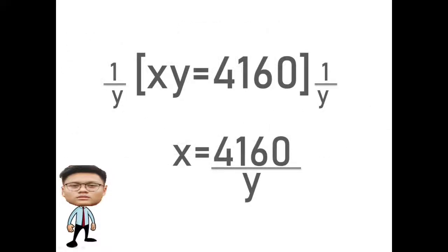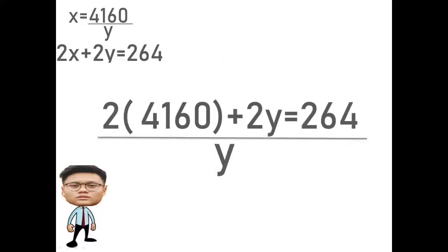We'll use substitution method in this kind of equation. First step, we will divide by 1 over y to the first equation to eliminate y, and the outcome will be x=4160/y. Second step, we will replace the value of x in the equation 2x+2y=264. So it will be 2 times 4160 over y plus 2y equals 264.